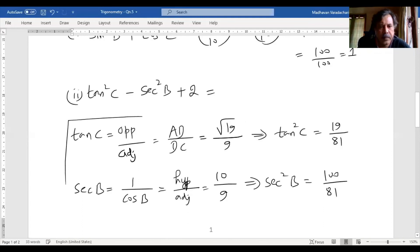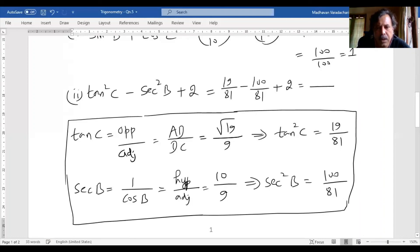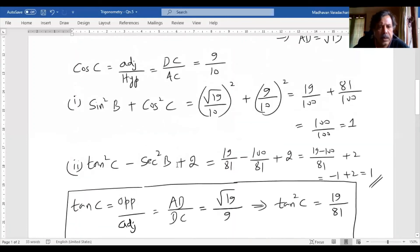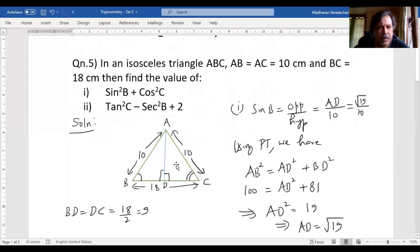So now we found all this. We can go back and substitute in the expression above. So tan square C will be 19 by 81 minus 100 by 81, then you have to add 2. So for the first two terms, 81 is common. 19 minus 100 plus 2. So this numerator will become minus 81. Minus 81 by 81 will be minus 1. Minus 1 plus 2, the result will be 1. So this completes both the questions in this question number 5.